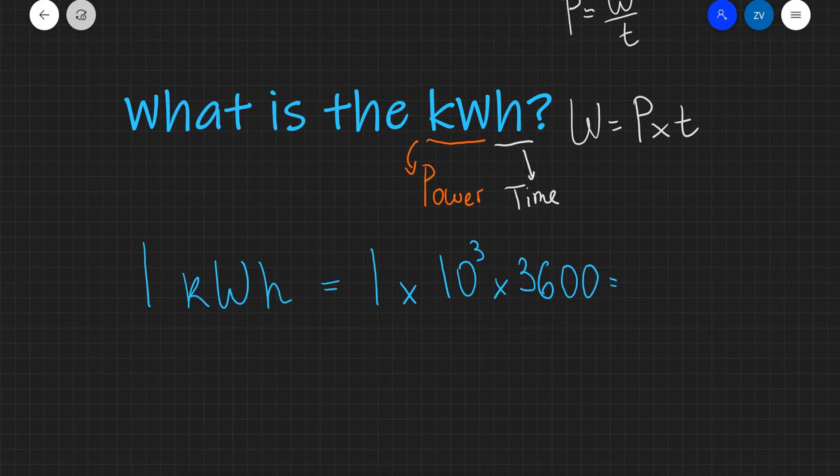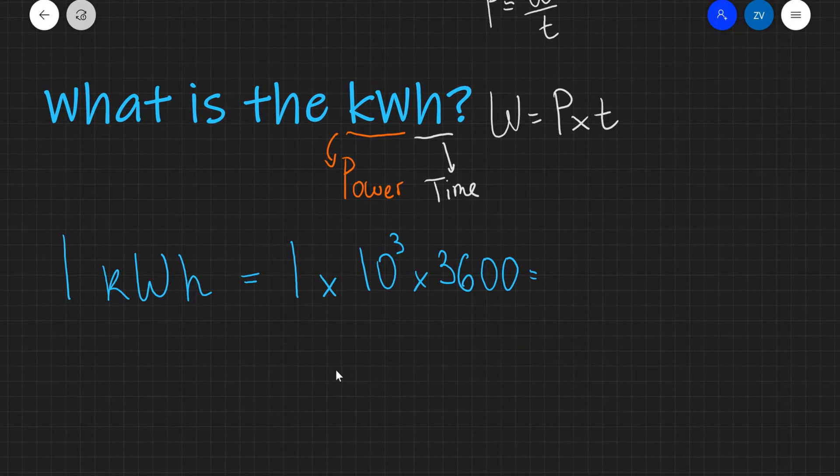And if we put that in standard form, we are going to get that one kilowatt hour will be equal to 3.6 multiplied by 10 to the power of six joules.